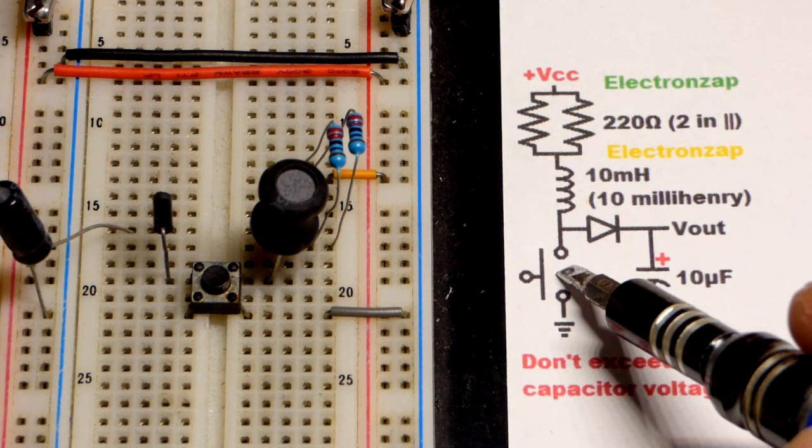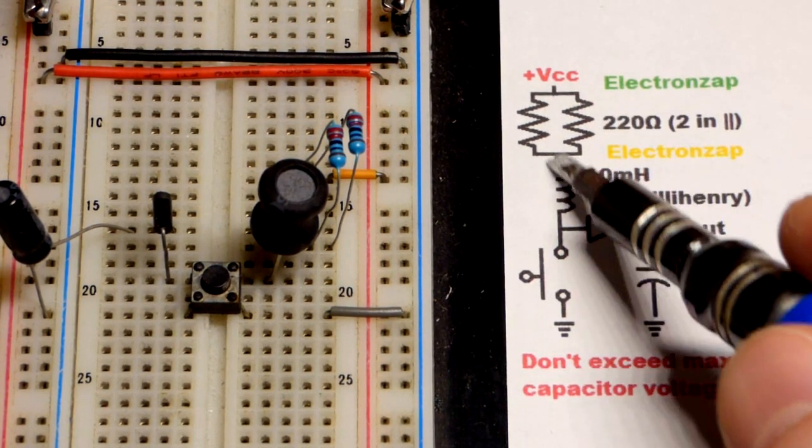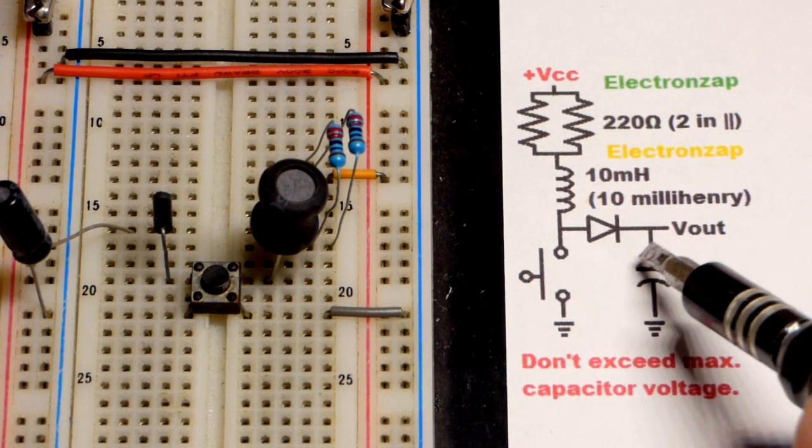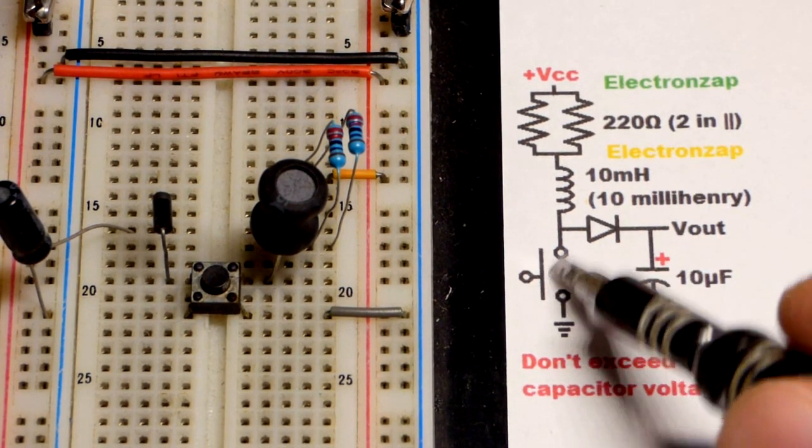One way to make this efficient is to only have it closed for as long as you need to get the current flowing, and then have it open only for as long as you need the current to pump into the capacitor. So you would do that very fast - that would make it much more efficient.